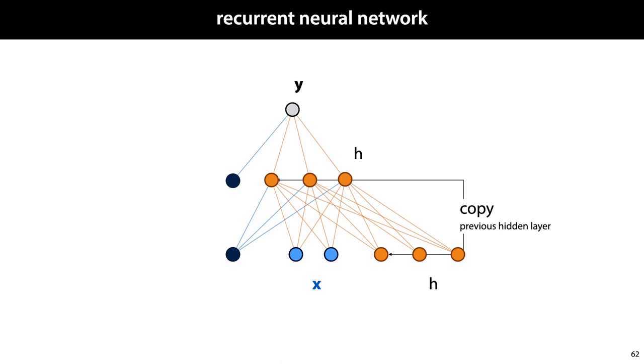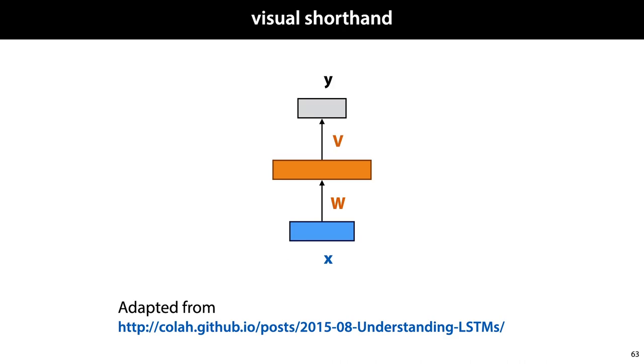To simplify our notations for the rest of the video, we'll introduce this visual shorthand. A rectangle represents a vector of nodes, and an arrow feeding into such a rectangle, annotated with a weight matrix, represents a fully connected transformation. We will assume that bias nodes are included without drawing them.